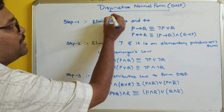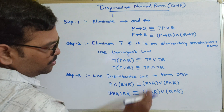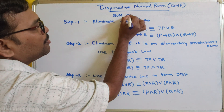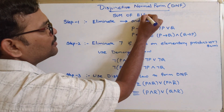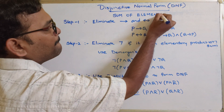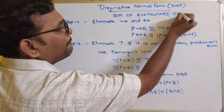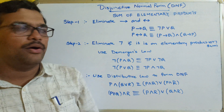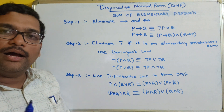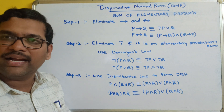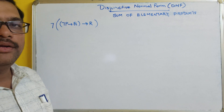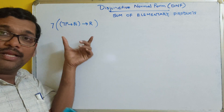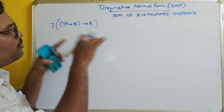So the Disjunctive Normal Form is nothing but sum of elementary products. Now let us look at an example so that you can understand. Obviously we can see this formula is not in DNF, so we have to convert it into DNF.